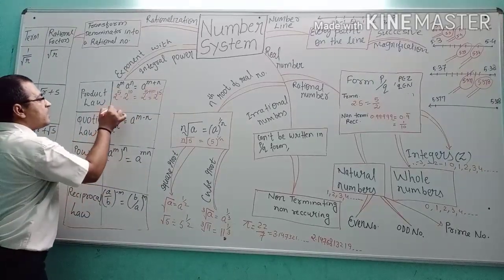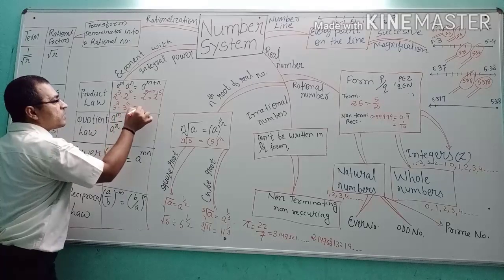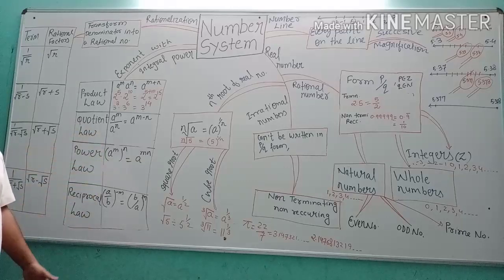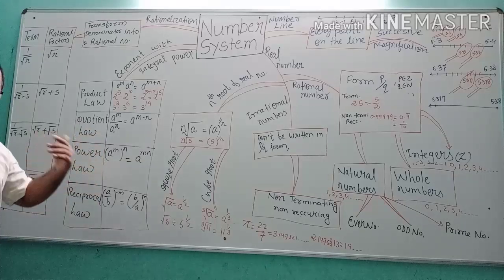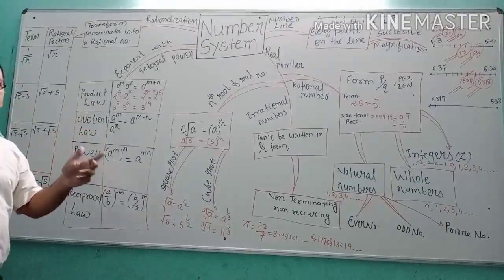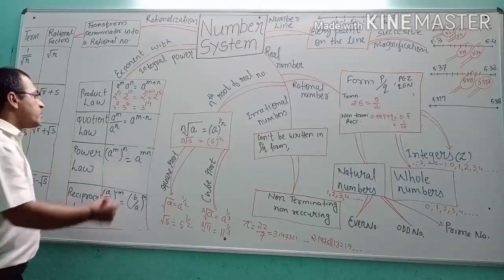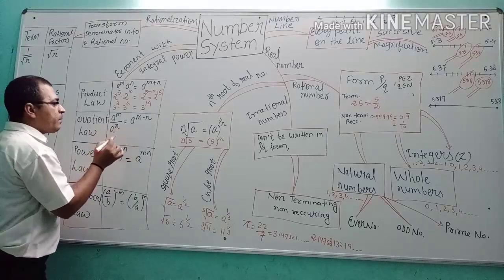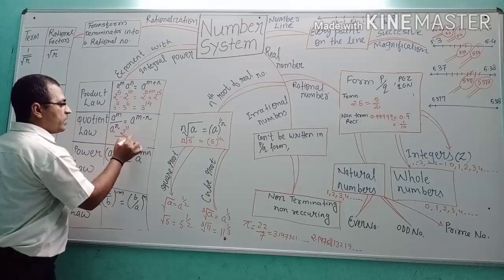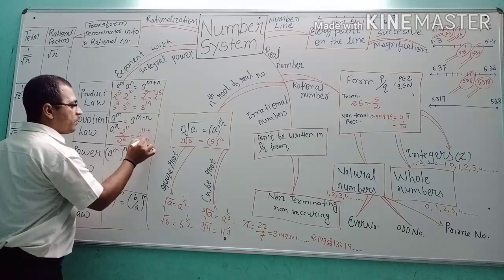Similarly, 3 to the power 8 multiplied by 3 to the power 6 equals 3 to the power 14. The next law is the quotient law — the real numbers are the same base but the terms are in p by q (numerator/denominator) form, and the powers are subtracted. For example, 2 to the power 11 divided by 2 to the power 6 equals 2 to the power 5.